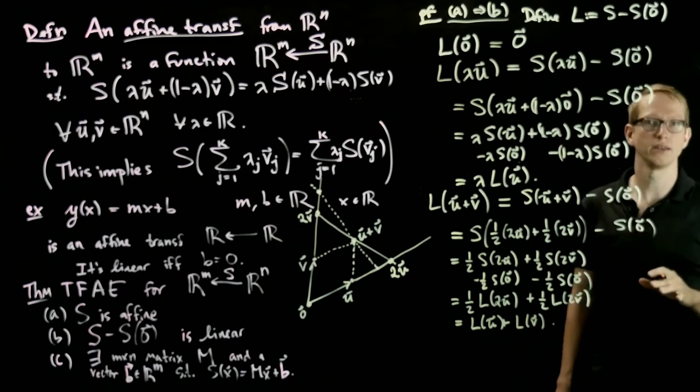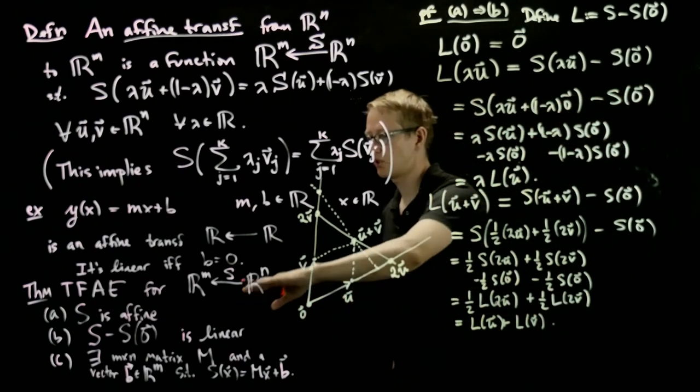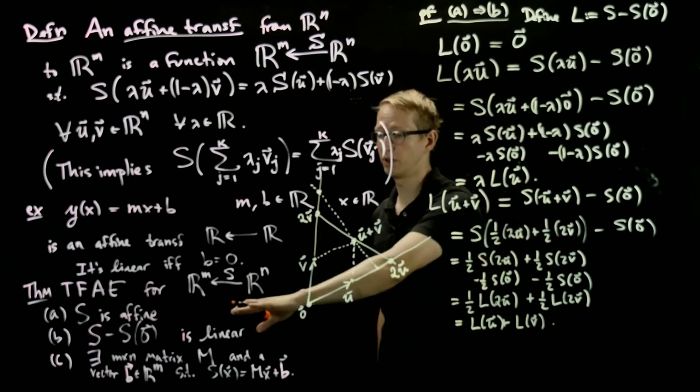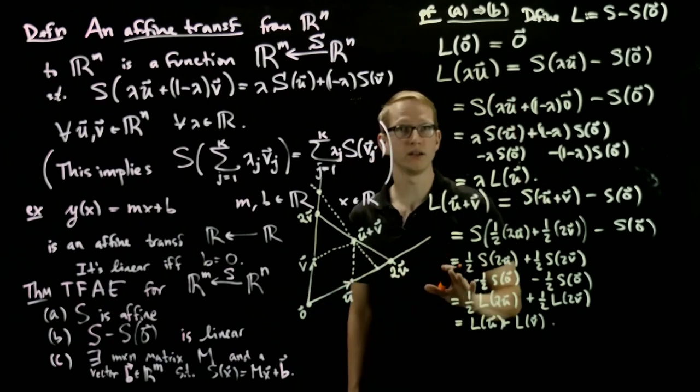And this together proves the linearity. So this is the proof that a implies b. If we have an affine transformation, we subtract by what it applies to when you plug in 0, then we get a linear transformation.